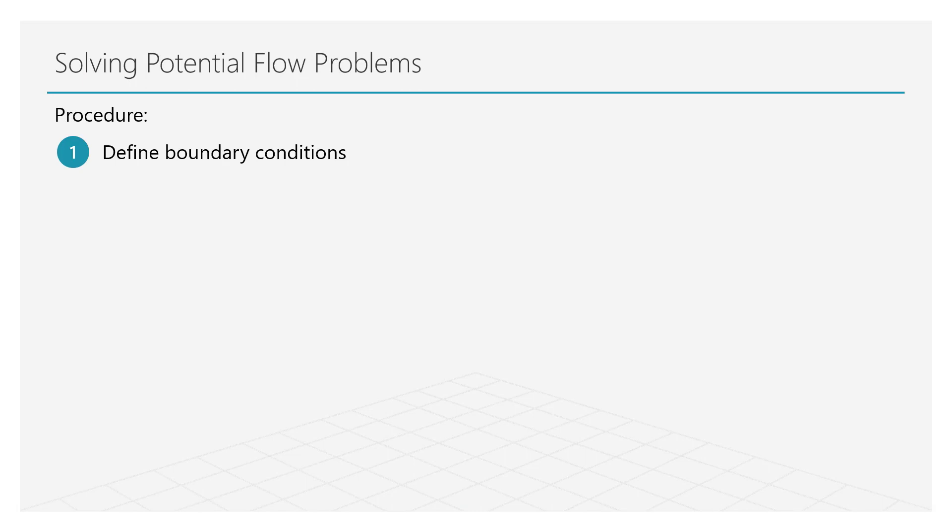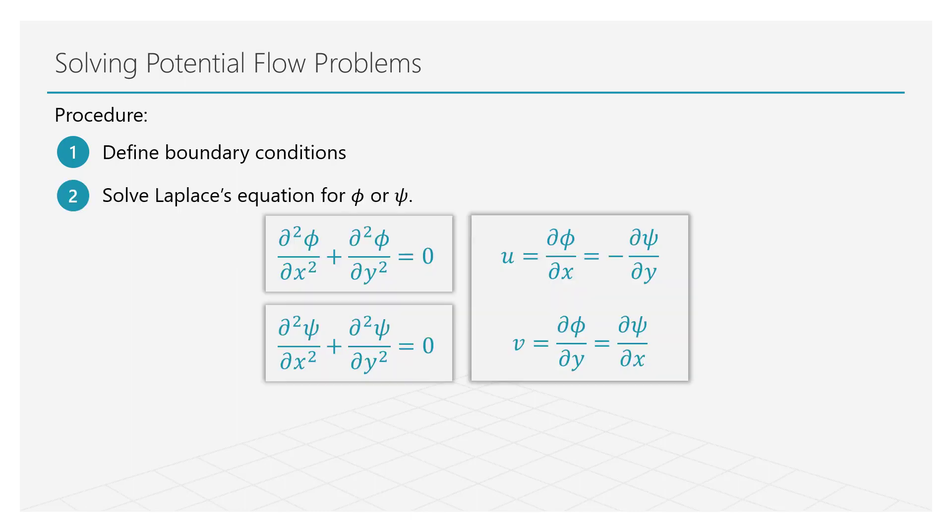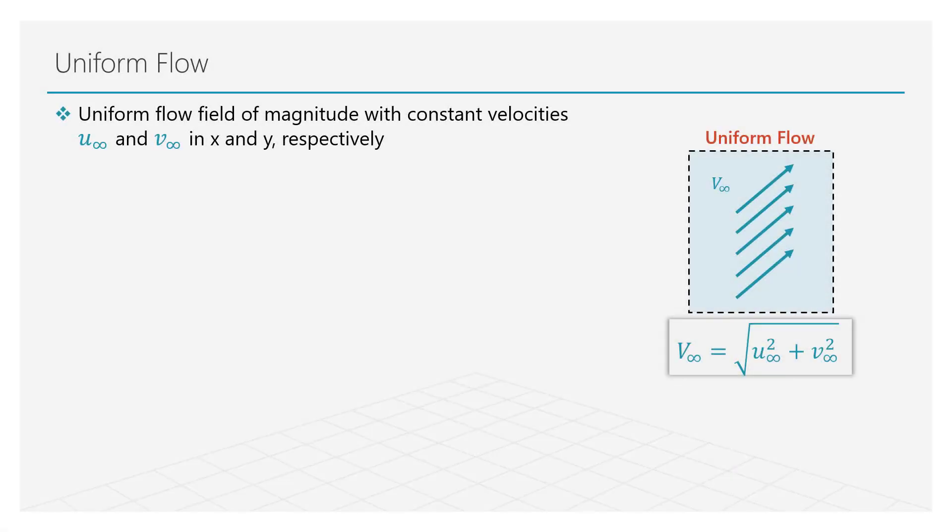We will first define the flow field based on certain known parameters such as the velocity of the flow. We will then derive the governing equations for the stream function or the velocity potential. Further later in the lesson, we will see how to superimpose multiple functions obtained from simple flow fields to create a complicated and realistic fluid flow problem. The first elementary flow field we will consider is that of a uniform flow, i.e. the constant velocities in the x and y directions.